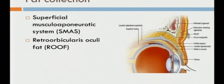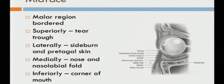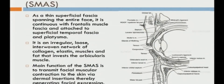The eyebrow region has a definite fat collection known as retro-orbicularis oculi fat, or ROOF. Similarly, another area of importance in oculofacial aesthetic surgery is the mid-face—the malar region bordered superiorly by the tear trough, laterally by the sideburn and pretragal skin, medially by the nose and nasolabial folds, and anteriorly by the corner of the mouth. The superficial musculo-aponeurotic system, or SMAS, is a thin superficial fascia spanning the entire face, continuous with the frontalis muscle fascia and attached to the superficial temporal fascia and platysma. It is an irregular, loose, interwoven network of collagen, elastin, muscle, and fat that invests the orbicularis muscle.